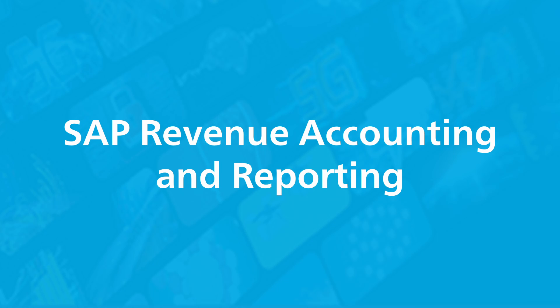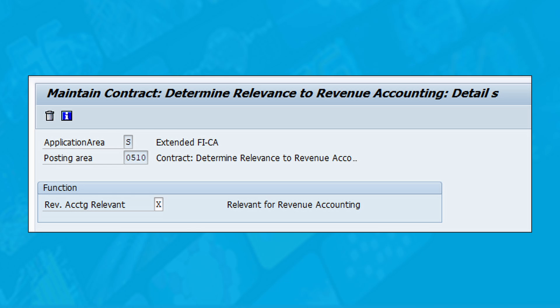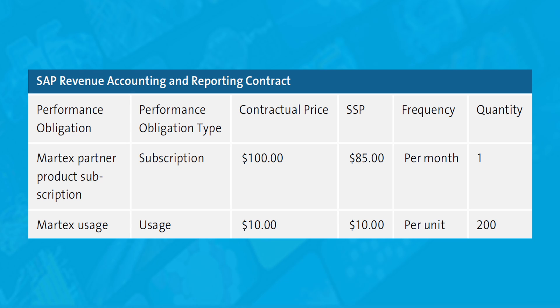SAP Revenue Accounting and Reporting lets businesses manage their revenue and income recognition cycles in compliance with various accounting policies. The solution comes with many accounting standards and rules pre-configured and automated, such as ASC-606 or IFRS-15. In addition, SAP RAR also provides a wide range of configurable reporting capabilities for cases in which the standard reports cannot meet a company's requirements.